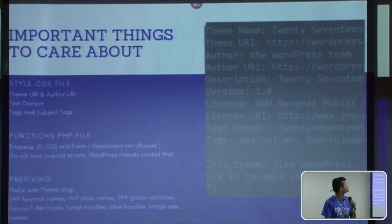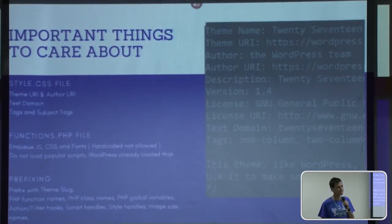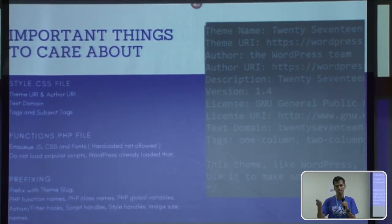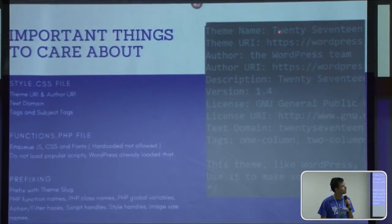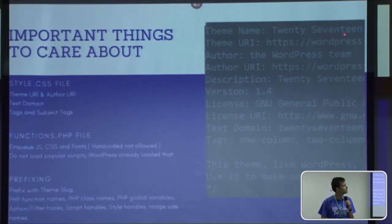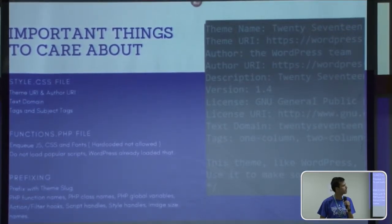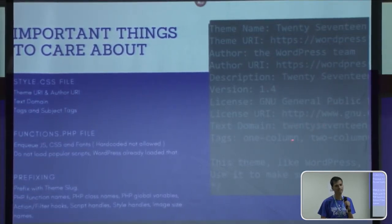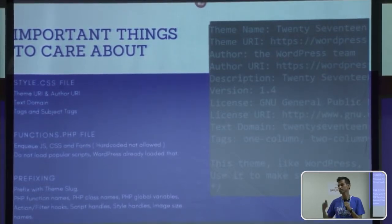Now, important things to take care of during theme development. Your theme has primary files like style.css, functions.php, and similar. For example, if your theme name is 2017, the text domain is also 2017. If your theme has two words like '20 17', you can write the text domain with a hyphen, like 20-17. These are things you need to care about.